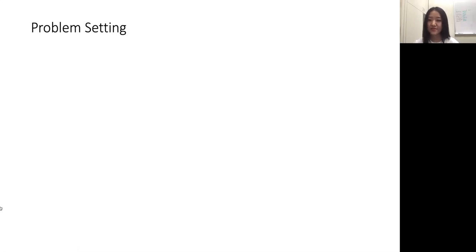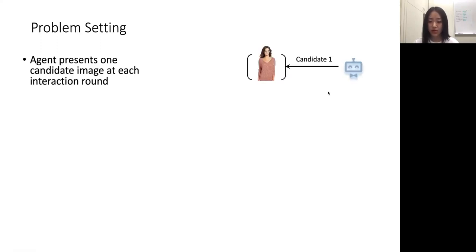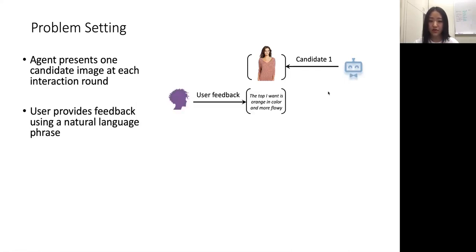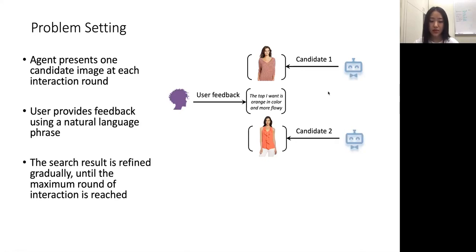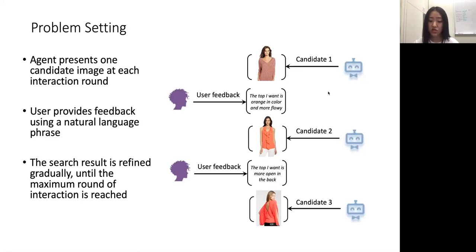Having an idea of how this system would run in action, let's look at the problem definition. In our paper, we narrow down the problem to make it more simplified. At each round, the agent will present one candidate image to the user. The user will look at the image and compare it to the desired search target, and provide natural language feedback that describes the differences of the two images. The agent will take the feedback and present a re-ranked result. This process will continue until the maximum round of interaction is reached, or the user can end the query.